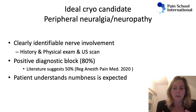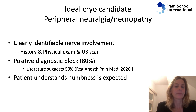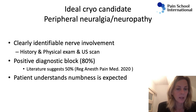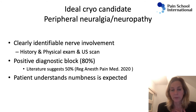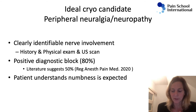It holds true for other areas like ilioinguinal neuralgia as well. If the patient sits up on the OR table and says 'oh my God, I wasn't able to sit up like this,' then you're happy — that's a good candidate. One more important thing: you need to tell the patient to expect numbness. I had a lateral femoral cutaneous neuralgia patient where I completely took the pain away, and the patient was very upset because of the numbness I gave her. So this needs to be discussed.